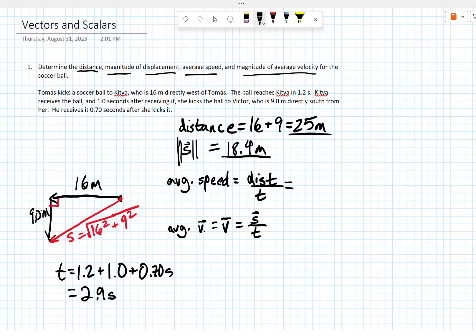So, our average speed is going to be distance over time. We're going to use a calculator to figure that out, give it just one moment, pull up my calculator. The distance over time is 25 meters over 2.9 seconds. 25 over 2.9 is 8.6 meters per second.